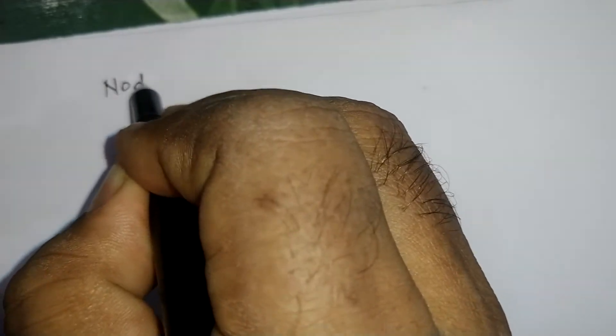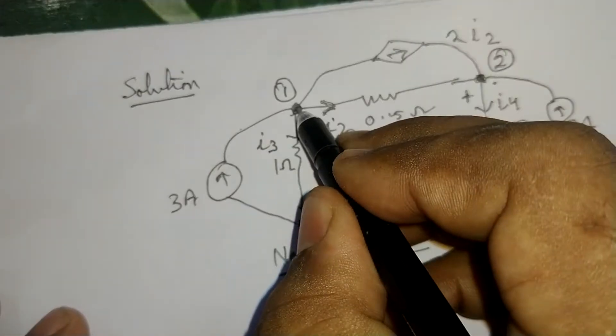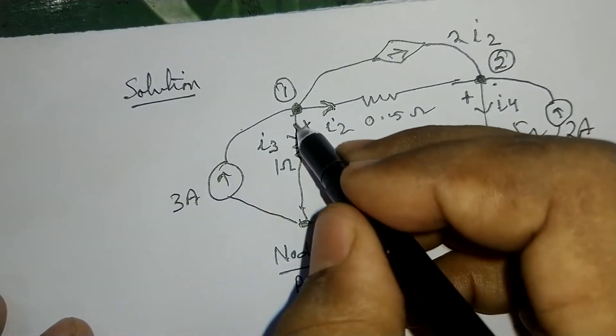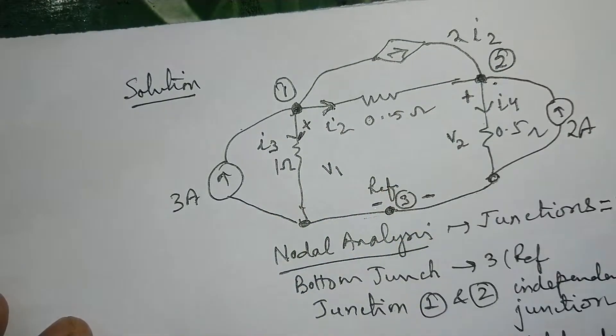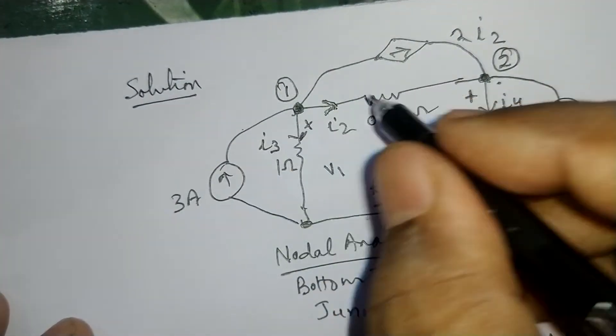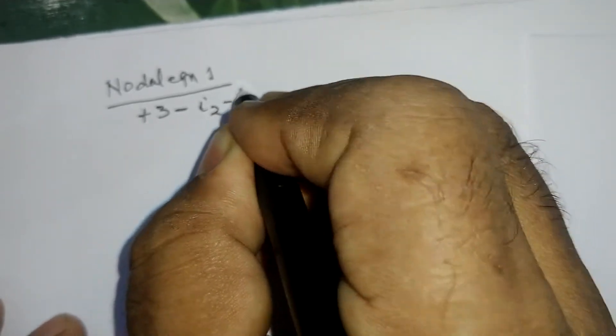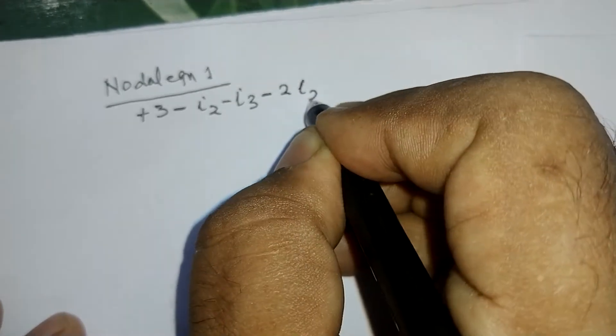To write the nodal equations, there will be 2 nodal equations since independent nodes are 2. Nodal equation 1 is written at independent node number 1. At this node, 4 currents are associated: 3 ampere, I3, I2, and 2I2. At node 1, the 3 ampere source is entering, while I2, 2I2, and I3 are all outgoing. Therefore, writing KCL with positive sign for incoming: plus 3 minus I2 minus I3 minus 2I2 is equal to 0.